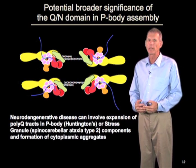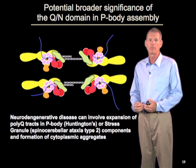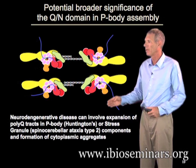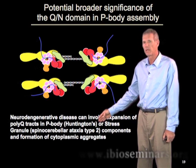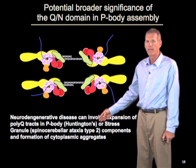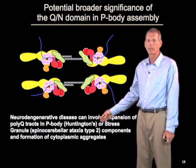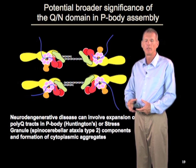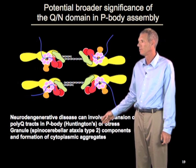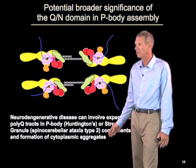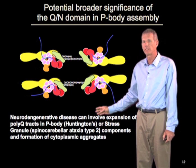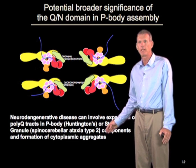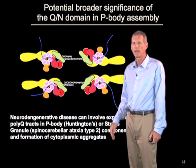It is striking that several neurodegenerative diseases involve the expansion of polyglutamine tracks in proteins which are normally components of p-bodies or stress granules. For example, Huntington's disease — the protein which gives rise to that neurodegenerative disease has a poly-Q track in it, and it is normally a component of p-bodies. That is probably why it has the poly-Q track, because part of its biology requires it to assemble into that complex. When that track expands too big, it leads to the formation of cytoplasmic aggregates, and it is controversial whether those are toxic or protective. There is a striking correlation between these neurodegenerative diseases and formation of aggregates probably related to p-bodies and or stress granules.